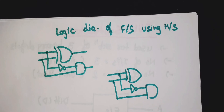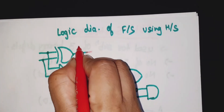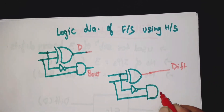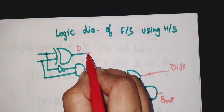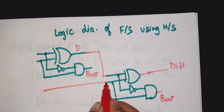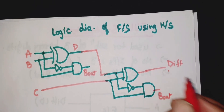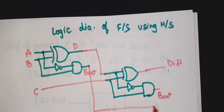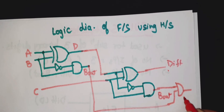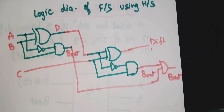Here we use two half subtractors according to the block diagram. This is the difference and this is B_out for the first; this is difference and B_out for the second. The difference of the first works as the first input for the second half subtractor. The second input is external — first input is A, then B, and this is C. This is the final difference. The borrow of first and borrow of second are OR-ed to get the final B_out.